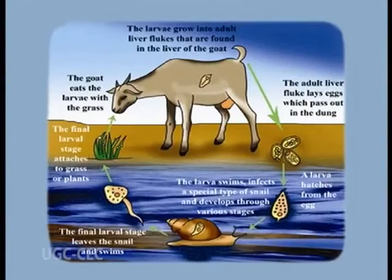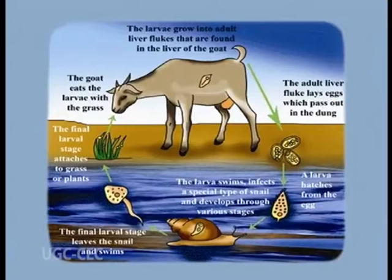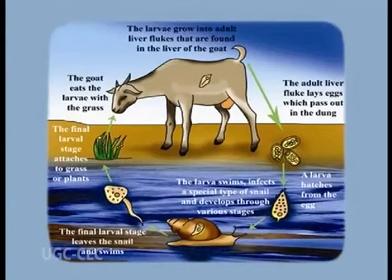Now look at the habit and habitat of the animal. This animal spends its life in two hosts. Host number one is known as the primary host — that is sheep and other vertebrates and mammals like dog, horse, including human. The different larval stages are carried out in another host, known as the intermediate host, which is a freshwater snail, scientifically known as Limnea.